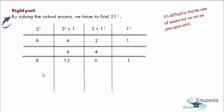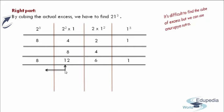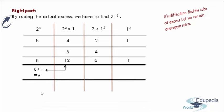Friends, in each and every part we should have only one digit. If you observe here, we are having only one digit, and in this part also only one digit. But here we are having two digits. So therefore we have to take the digit in the one's place, that is 2, in the answer. And the excess digit in the ten's place should be taken as carry to the next part. I am taking this 1 to the leftmost part and adding it: 8 plus 1 gives us 9.